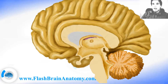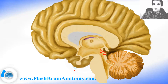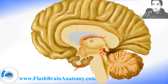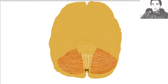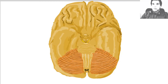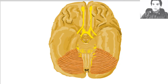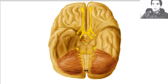The border between the diencephalon and the mesencephalon is right here, between the posterior commissure and the superior colliculi. And on the basal side of the brain, the border is the mammillary body. If you look from the basal point of view, you would be able to see the mammillary bodies right here.